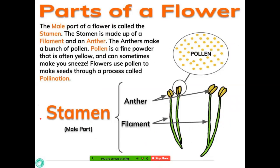The male part of the flower is called the stamen. The stamen is made up of a filament and an anther. The anthers make a bunch of pollen. The anthers are these little top yellow pieces — they are really sticky and have lots of pollen. Pollen is a fine powder that is often yellow and sometimes can make you sneeze. Flowers can use the pollen to make seeds through a process called pollination.